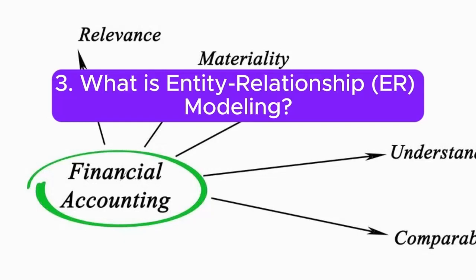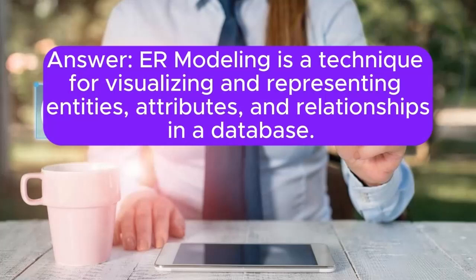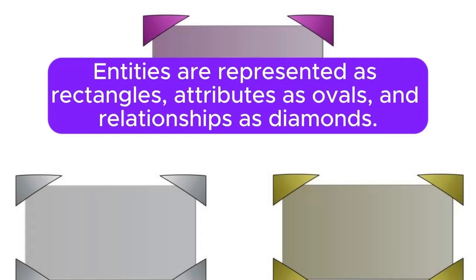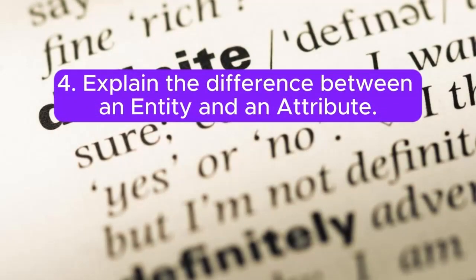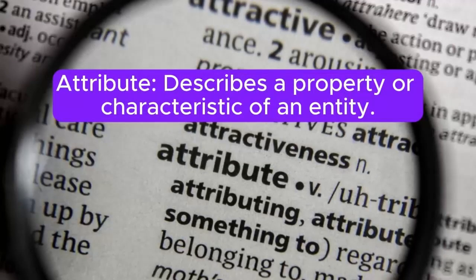3. What is entity relationship modeling? Answer: ER modeling is a technique for visualizing and representing entities, attributes, and relationships in a database. Entities are represented as rectangles, attributes as ovals, and relationships as diamonds. 4. Explain the difference between an entity and an attribute. Answer: An entity represents a real-world object or concept with a distinct identity. An attribute describes a property or characteristic of an entity.